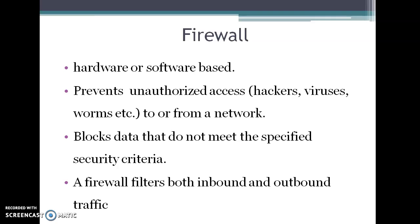Your firewall will always prevent unauthorized access to or from the computer, acting in both directions. Whenever any data is to come out of your network, your firewall will check the data first and see whether it meets the specified security criteria. If it meets the required criteria, it allows the data to go out into the internet.